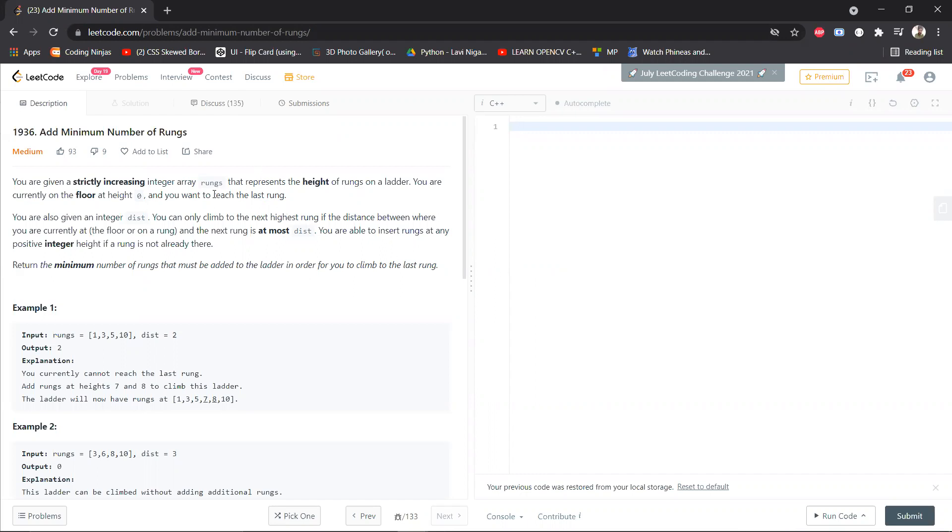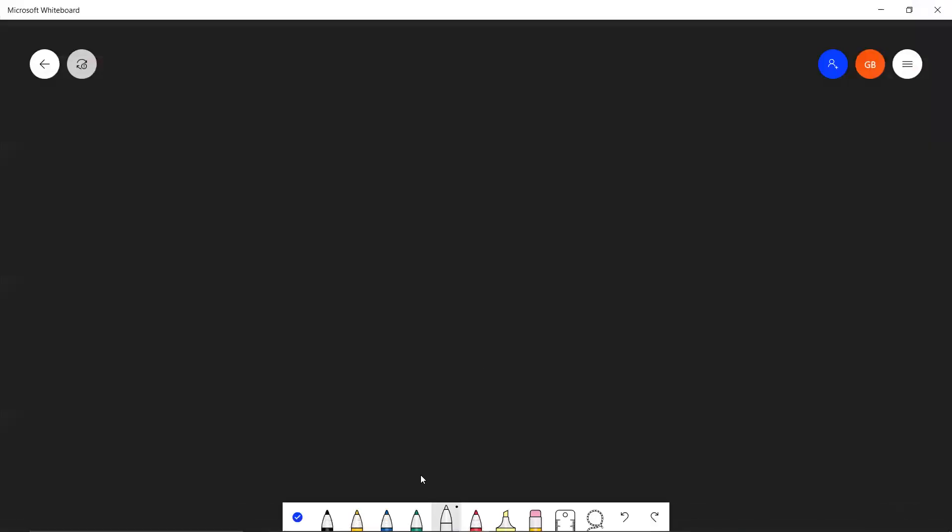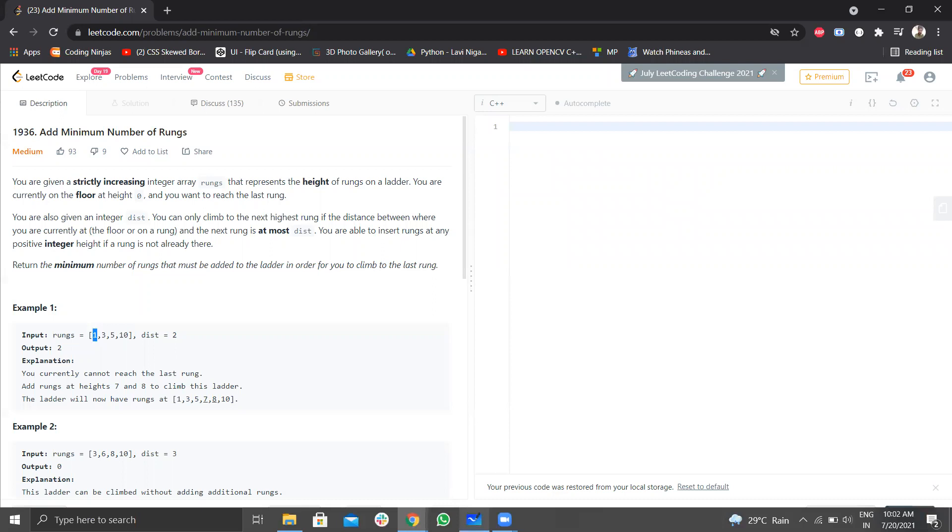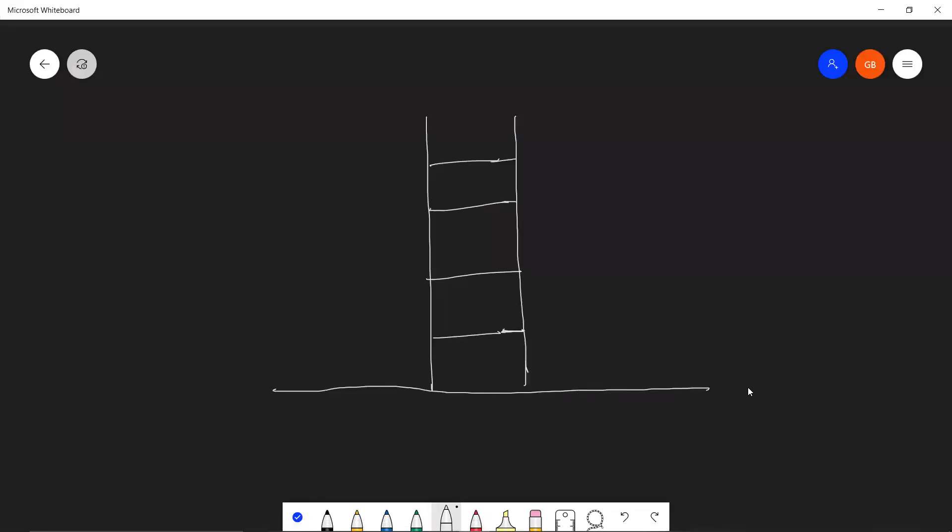So let's understand this question. First, what are you supposed to do? You have a ladder that you need to climb and you have been given an integer array such as rungs, where each integer represents the height of the next rung. Ladder is a structure something like this. And usually in the ladder, the rungs are equidistant. This is not the case. The first rung is at a distance of one from the floor. And the floor should be considered at height zero. So this is your floor being considered height zero. This is one, this is three, this is five and this was ten.